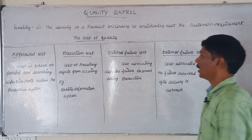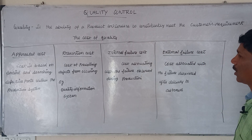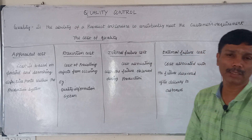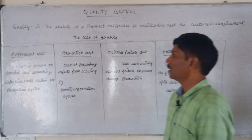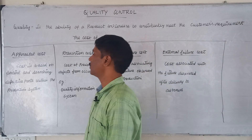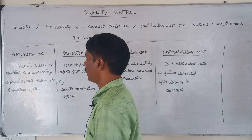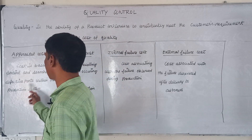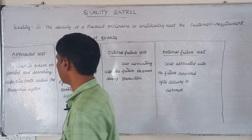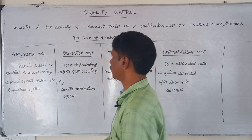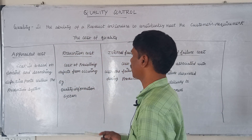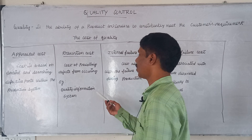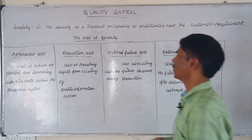The four types of quality costs are: prevention cost, internal failure cost, and external failure cost. Appraisal cost is based on inspecting and searching for defective parts within the production system. Prevention cost is the cost of preventing defects, including a quality information system.